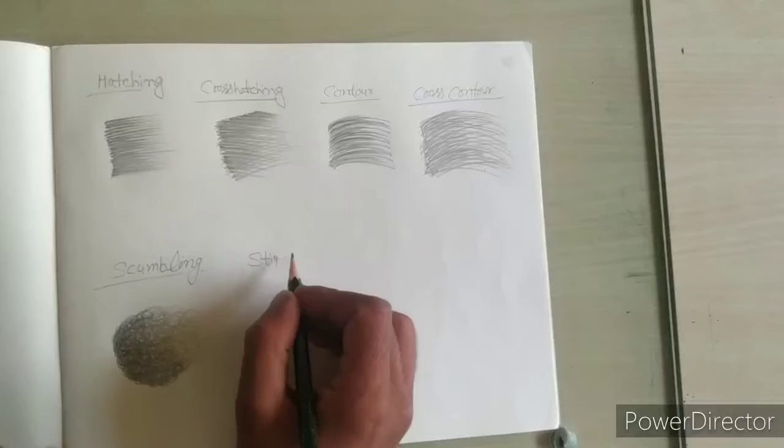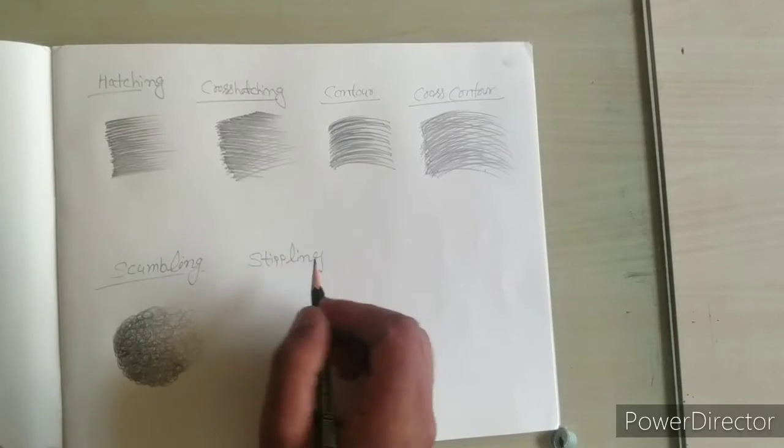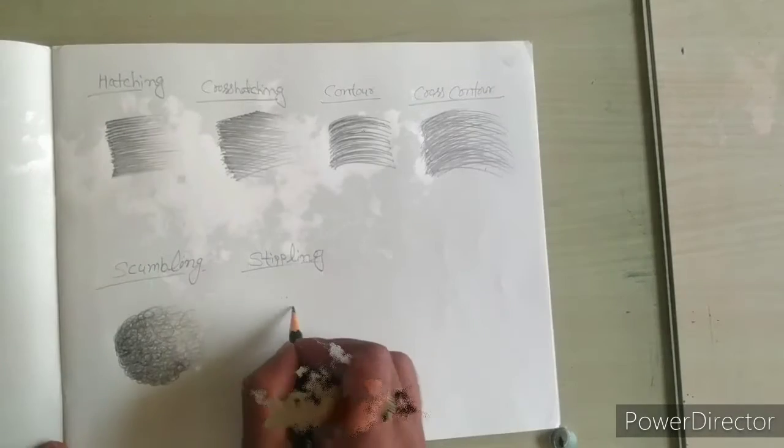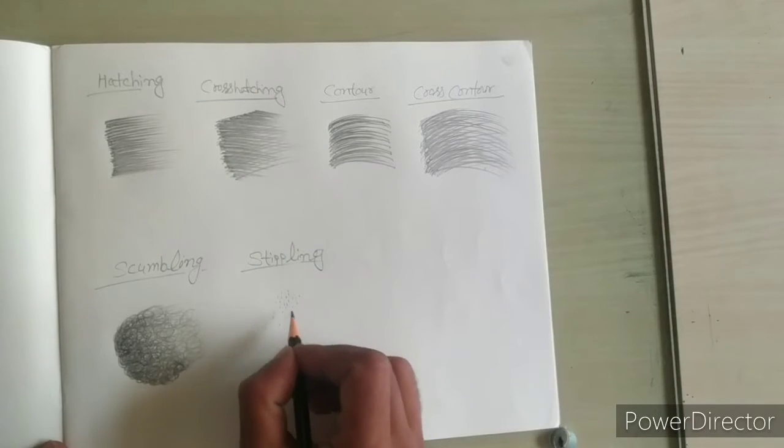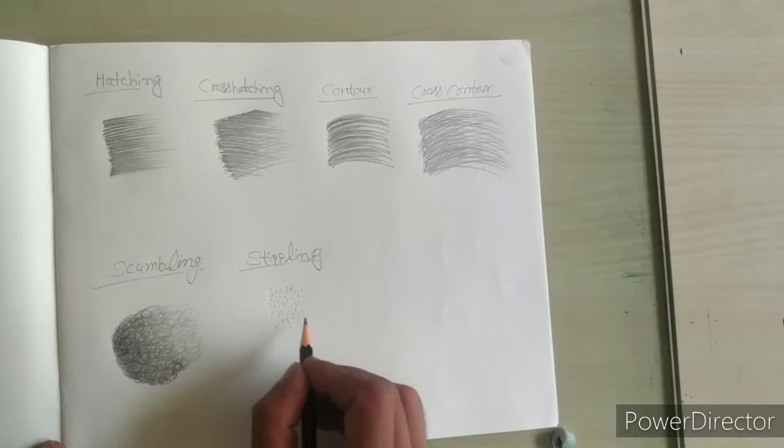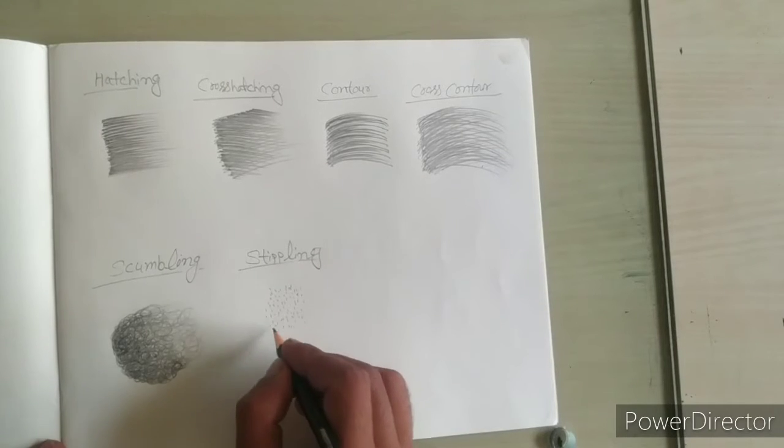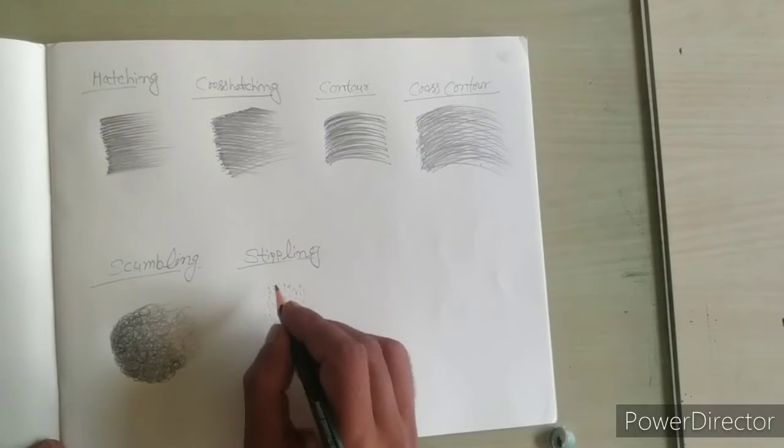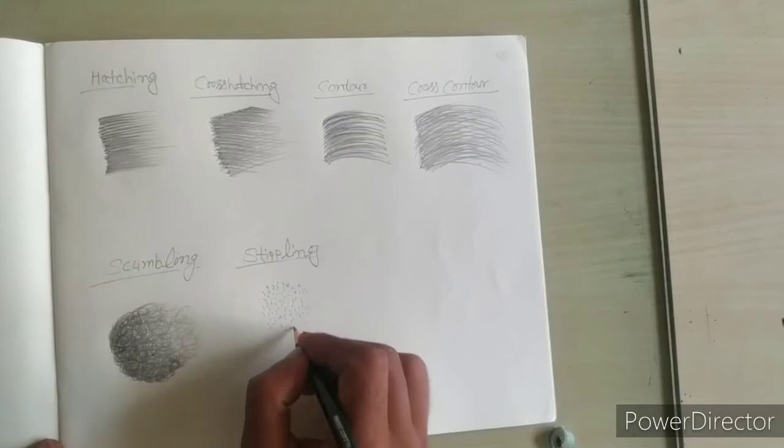Next one is tippling technique. Draw many dots like this, this is tippling technique. Students remember, minimum five steps to draw dots that are added to darker the value becomes.